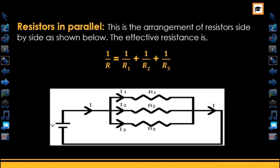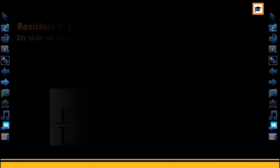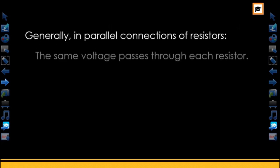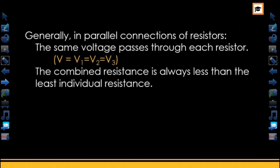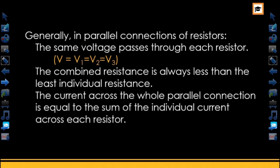In parallel connection, the following should be noted: the same voltage passes through each resistor. Also, the combined resistance is always less than the least individual resistance — meaning the effective resistance offered is very small. The total current across the whole parallel connection is equal to the sum of individual currents across each resistor.